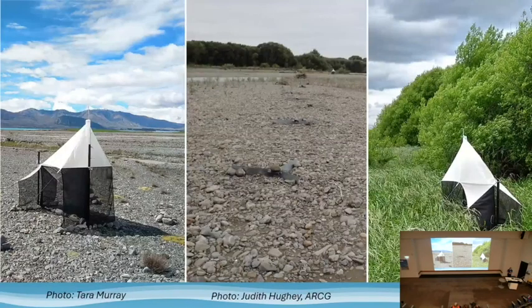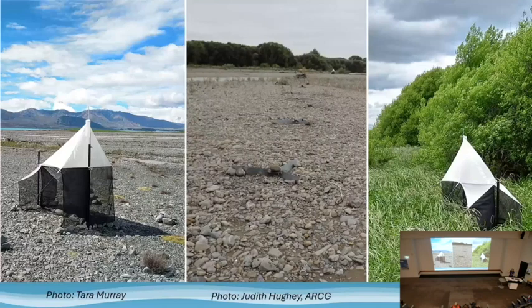Over time we've looked at three rivers. We've got the Cass — the same place Holly was working, upland, pristine, not very weedy. We've got the Ashley, which is lowland, a bit more weedy and constrained. And then you've got the Aparima down in Southland, which looks much more constrained.